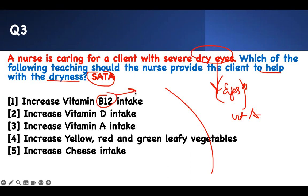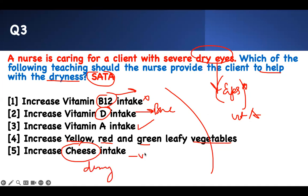Vitamin B12 is usually for patients with peripheral neuropathy and other symptoms. Calcium and vitamin D have nothing to do with your eyes — they're for bone. When I see vitamin A, I'm picking it. What are the sources of vitamin A? Yellow, red, green leafy vegetables, carrots — all those fresh green, red, and yellow foods are good for vitamin A. I see cheese — that's a dairy product, usually vitamin D and calcium, nothing to do with vitamin A. So your right answers are three and four.